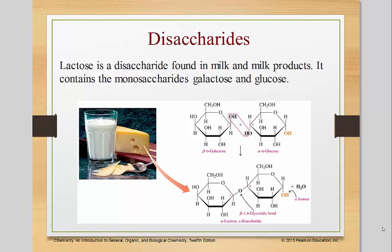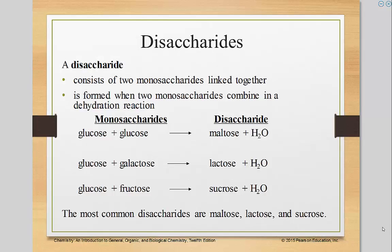In this tutorial, we will be talking about disaccharides. A disaccharide is a compound that consists of two monosaccharides. In the previous units, we talked about the three primary monosaccharides — the three most common ones — which are glucose, galactose, and fructose.